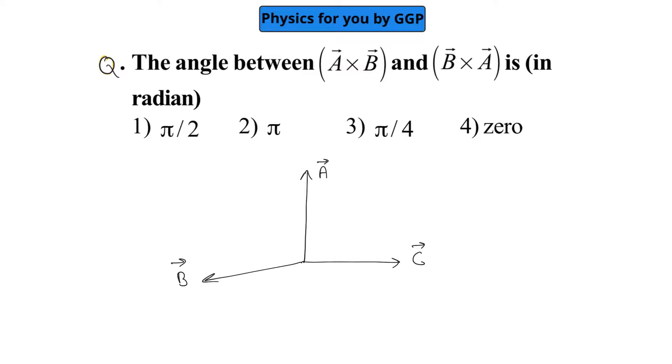Same time, if you are going for B cross A, we are going to get it in a direction which is opposite to that of the x-axis, or opposite to that of C.